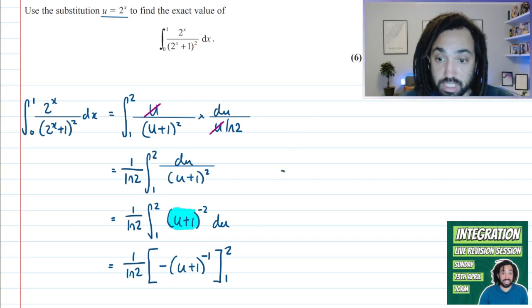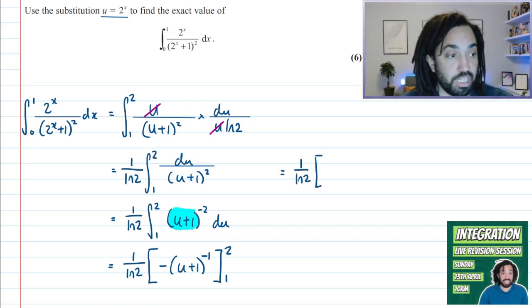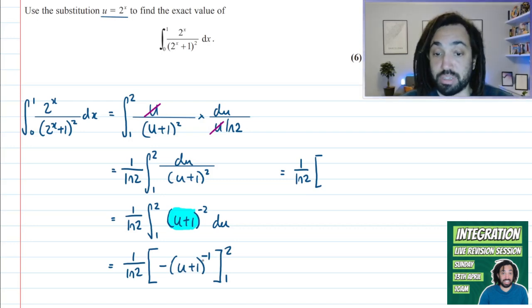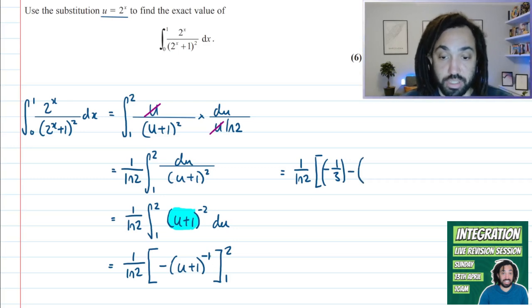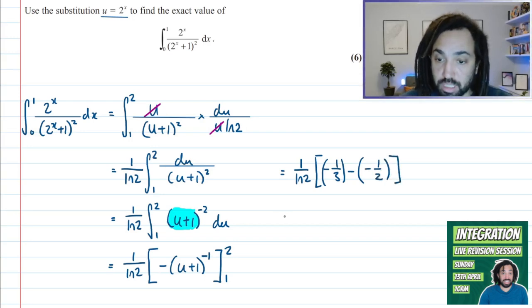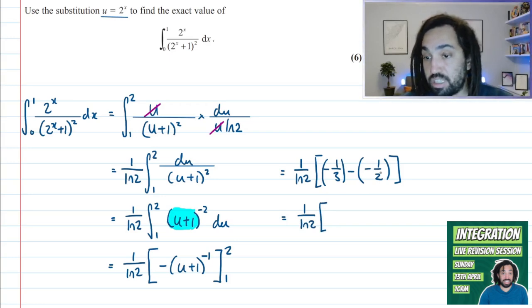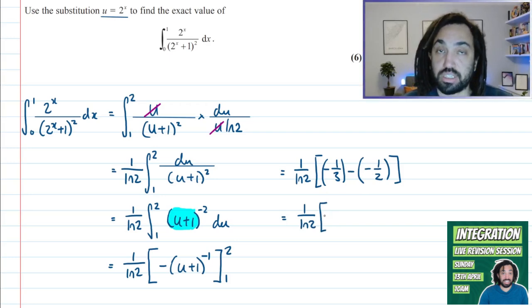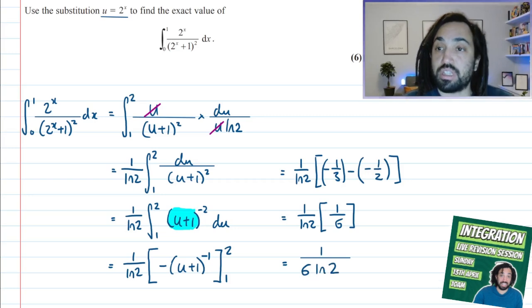So now what we need to do is just simply substitute in our limits. So the 2 goes in first, we get 2 plus 1 is 3, and then minus 1 power means the reciprocal. So that's 1 third, and then there's also a negative here as well. So that's the first limit. And then the second limit is 1, so 1 plus 1 is 2. Reciprocal is a half, then minus, so minus a half. Okay, perfect. So next, we just need to add these together. So positive a half minus a third is going to be a sixth. And then finishing it all off, we're going to get 1 over 6 ln 2. And that is our final answer.